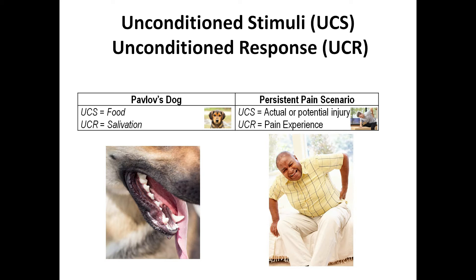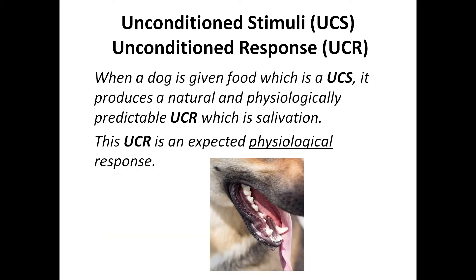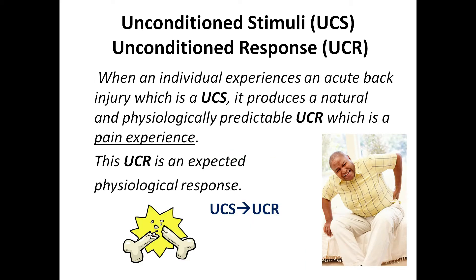The unconditioned stimuli is the food, and the unconditioned response is salivation, in the Pavlov's dog scenario. In the persistent pain scenario, the UCS is actual or potential injury, and the UCR is the pain experience. When a dog is given food, which is a UCS, it produces a natural and physiologically predictable unconditioned response, which is salivation. When an individual experiences an acute back injury, which is a UCS, it produces a natural and physiologically predictable UCR, which is a pain experience. So, UCS can lead to a UCR.